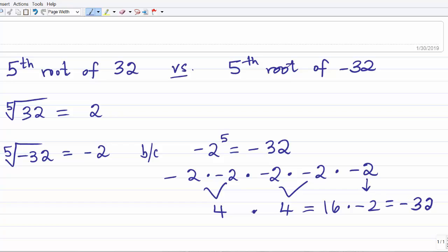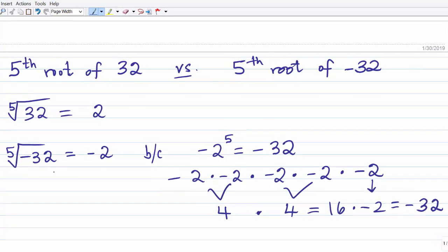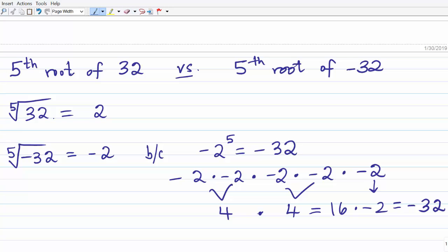So I hope that clears up that confusion. Sorry, I forgot the negative sign. The fifth root of negative 32 is negative 2, and the fifth root of 32 is positive 2. I hope that helps.